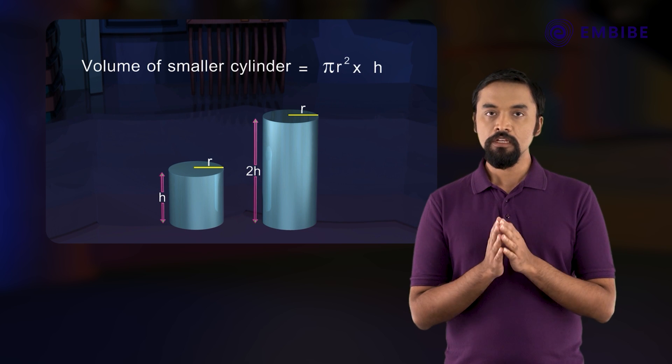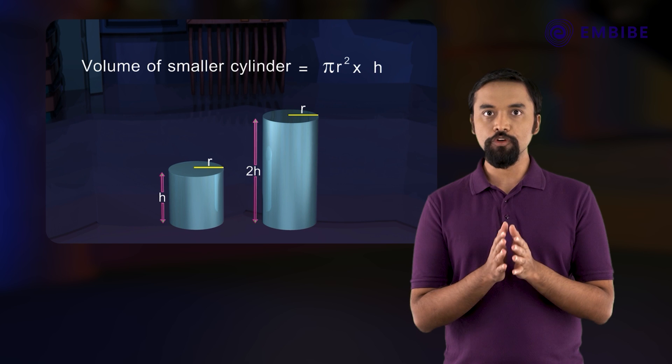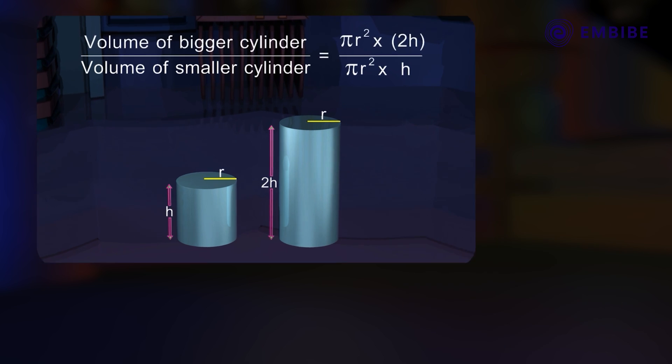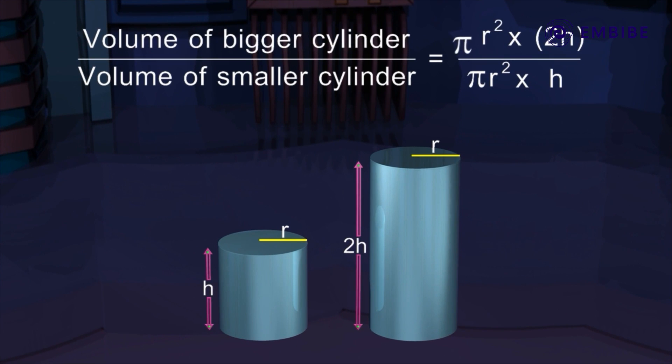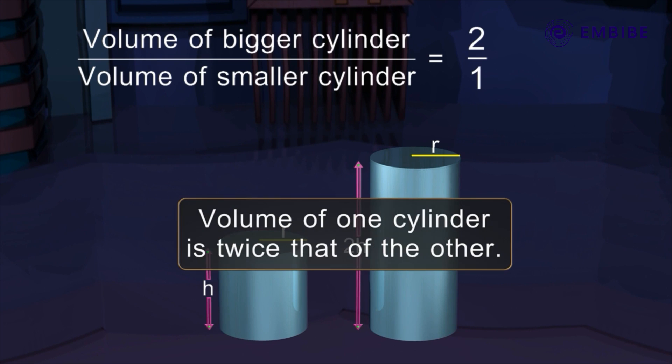So the ratio of the volumes is π r squared multiplied by 2h divided by π r squared multiplied by h, which equals 2/1. Hence, the volume of one cylinder is twice that of the other cylinder.